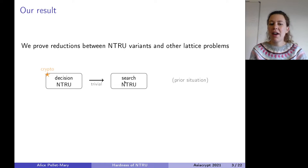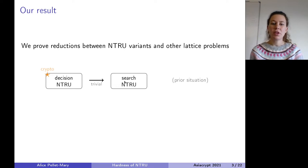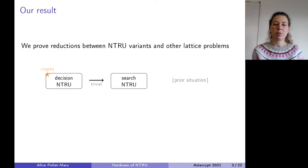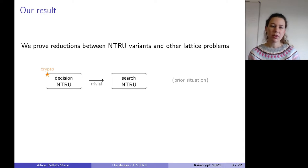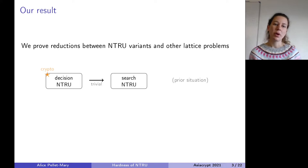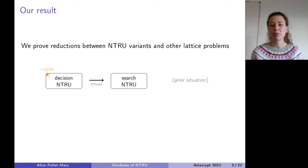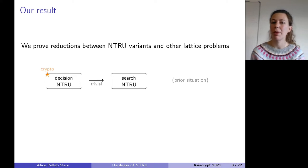This is not a very surprising reduction. The idea of search NTRU is to recover some secret information, whereas decisional NTRU asks you to distinguish if something is an NTRU instance or uniform. So if you can recover the secret information, you can say it's an NTRU instance; if you don't get any secrets, you say it's uniform. Usually if you can solve search, you can solve decision variants of problems.